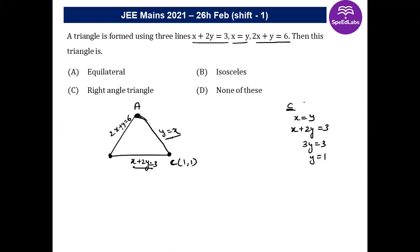For vertex A, solve y = x and 2x + y = 6. Substituting gives 3x = 6, so x = 2 and y = 2. Therefore vertex A is (2, 2).